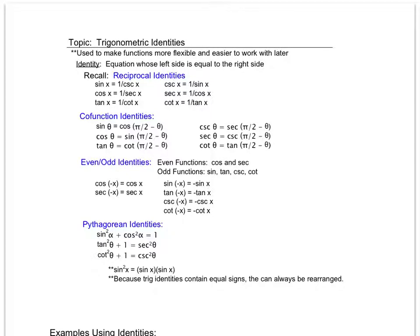In this unit we're going to look at a bunch of different trig identities. An identity is an equation whose left side is equal to the right side. We're going to use them to do a variety of things: we'll use them to rewrite different trig expressions in simplest form, verify or prove that one side is equal to another side, and to assist us in solving equations.